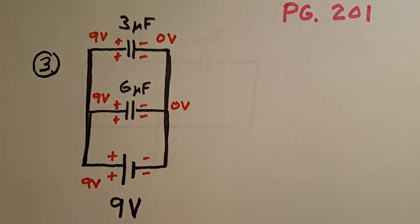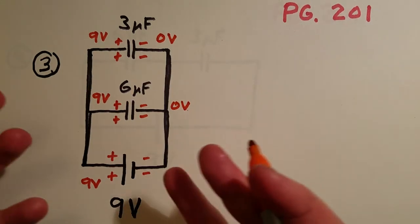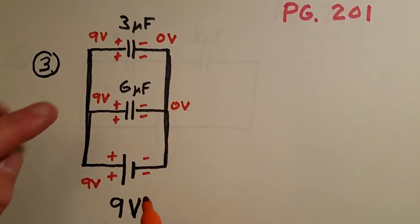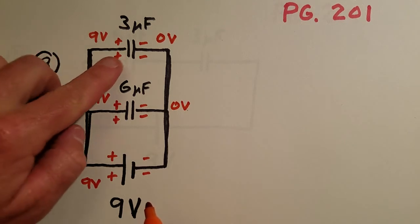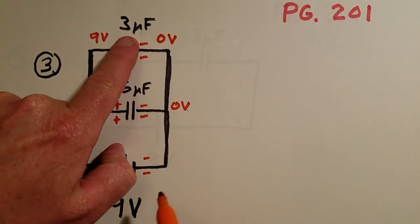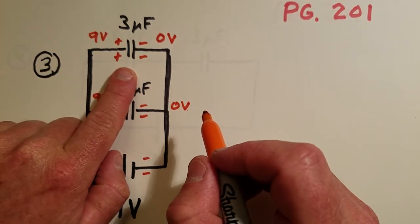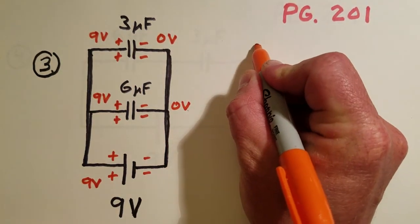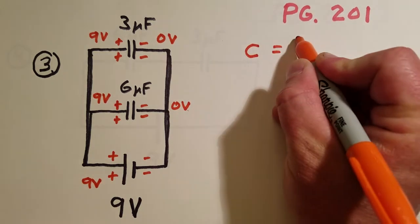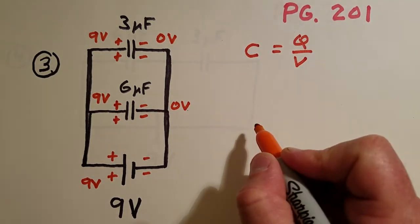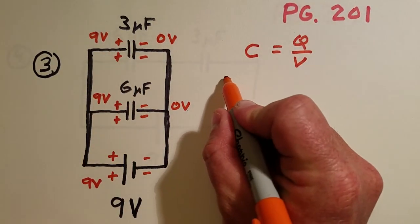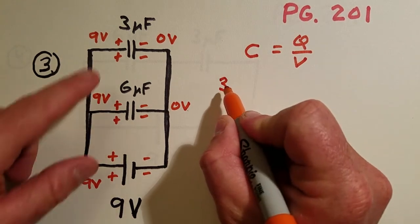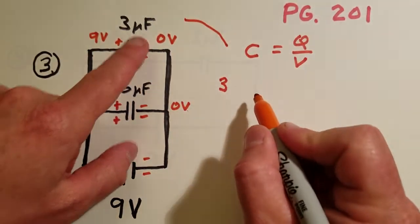Once it's full, what you can do once everything has settled down is you can just directly apply the definition of capacitance to each capacitor to figure out how much charge has built up on it. On this three microfarad capacitor, if we go to the definition of capacitance which is C is Q over V, we have a three microfarad capacitor here, so we're just going to use this directly.